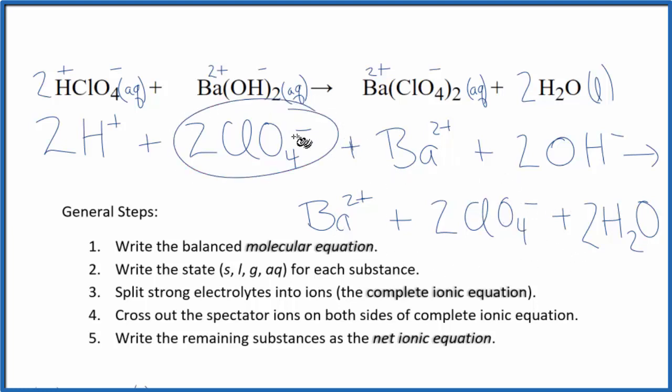I see I have 2 perchlorate ions here in the reactants, 2 in the products. I'm going to cross those out. I have a barium ion here, and in the products. Cross those out.